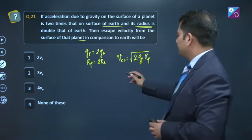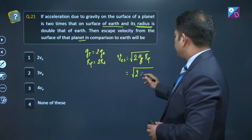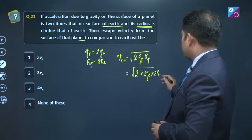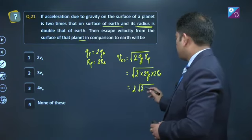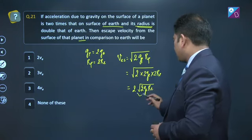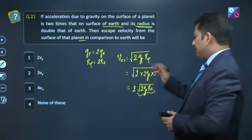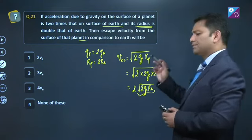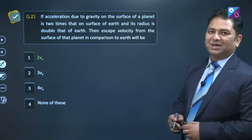Now this is equals to twice of g of planet is 2ge, radius of planet is 2re. Agar aap dhyan se dekho this becomes 2 under root 2gere aur yehi hai escape speed from the surface of the earth. Yani ki this expression now becomes twice of escape speed from the surface of earth. In other words, option number 1.